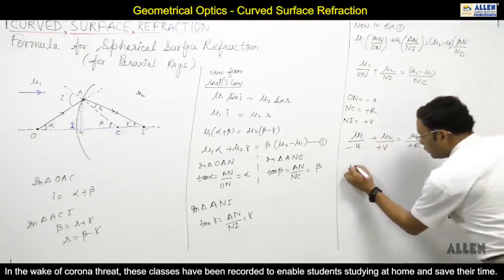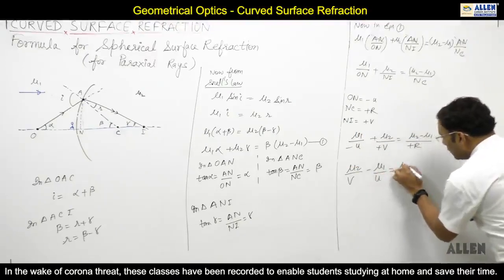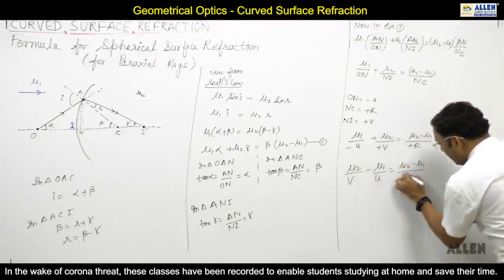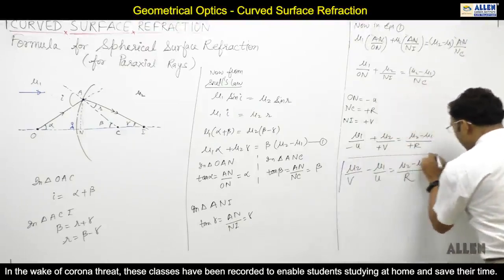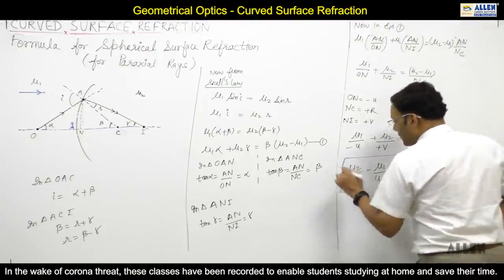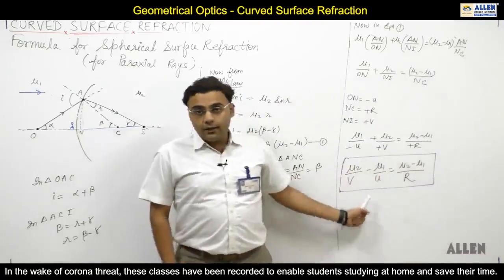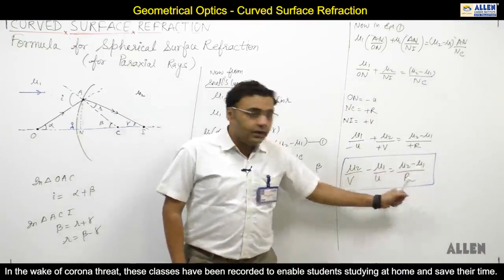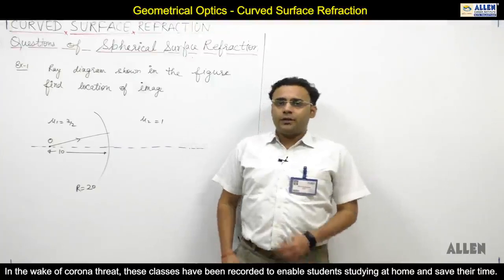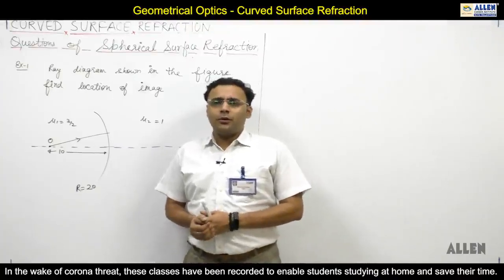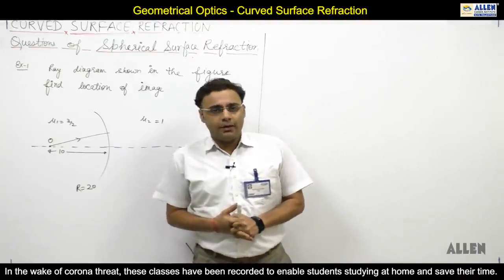This is the formula for spherical surface refraction: μ2/V minus μ1/U is equal to (μ2 minus μ1)/R.